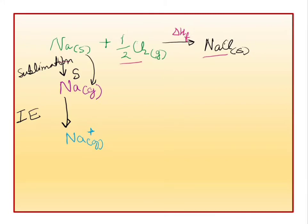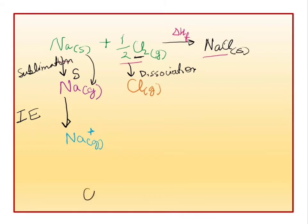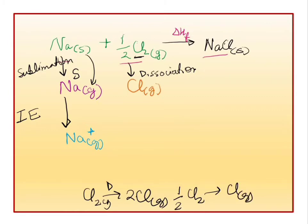Ab hum is chlorine gas ko chlorine gaseous atom mein convert karte hai. Is conversion ko hum kya karenge? Dissociation — yeh dissociation ho raha hai. Dissociation yani ek jo Cl₂–Cl₂ bond hai woh toot raha hai. Toh agar Cl₂ dissociate hota hai 2 Cl gaseous atom mein, toh yahaan par kitni dissociation energy use hoti? D. Agar half Cl₂ dissociate hoga, toh kitne Cl banenge? Ek Cl. Toh kitni energy hogi? Half D. Toh yahaan par jo energy ki zarurat padegi, woh hai half D.